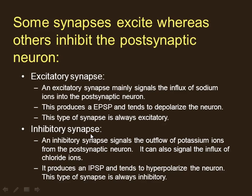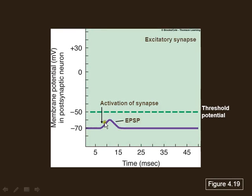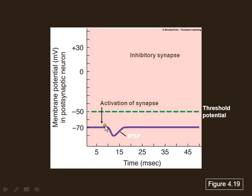It's either excitatory or inhibitory, but never both. If it's excitatory, moving up more positive, that's depolarization. If it moves further into the negative, that's hyperpolarization. That was a review, and here's a list of some transmitters we'll talk about this semester.